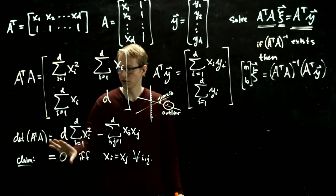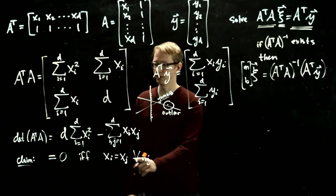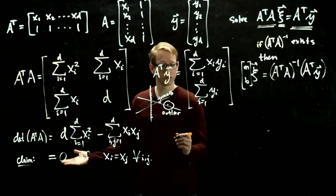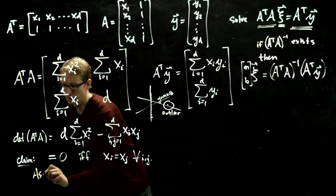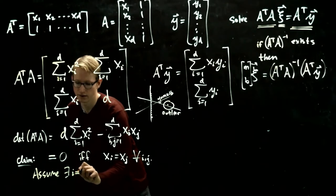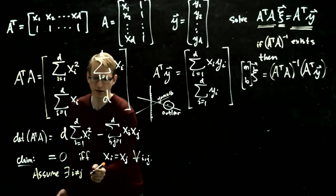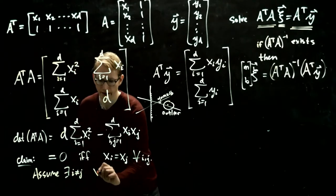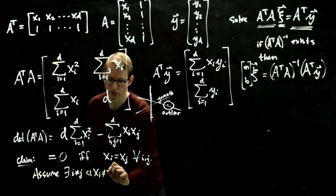So that's the claim. So this determinant vanishes if and only if all of these data points are equal. So let's assume that this does not happen. Assume there exists an i and a j that's not equal, an i and a j which they are not equal, and such that xi is different from xj.